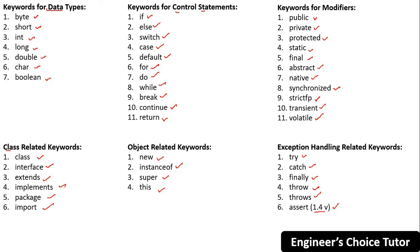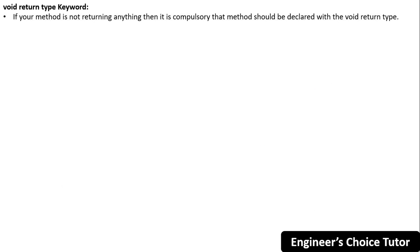We have exception handling related keywords: try, catch, finally, throw, throws, and assert — assert came in version 1.4. This lecture is only meant to give you an overview of reserved keywords present in Java. We will see each and every keyword in detail as we progress through the course.